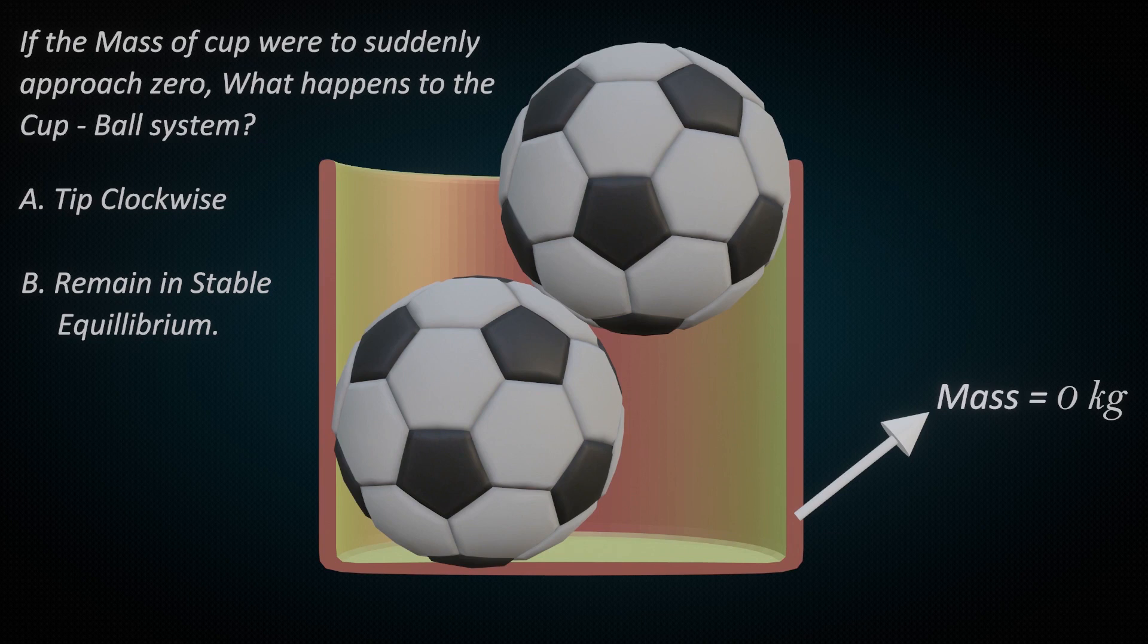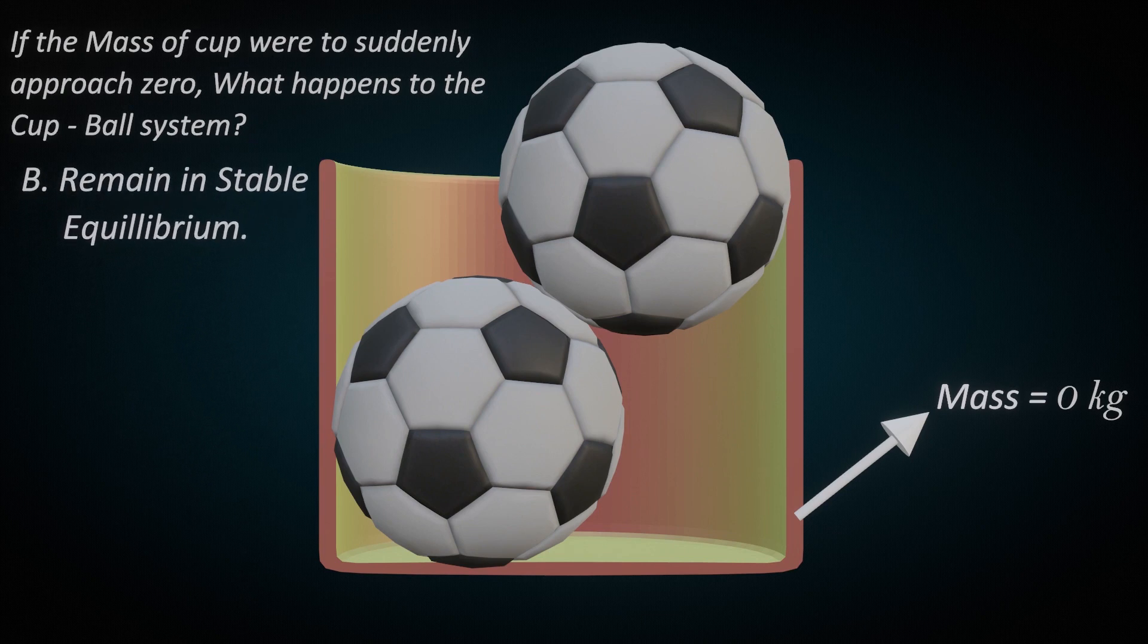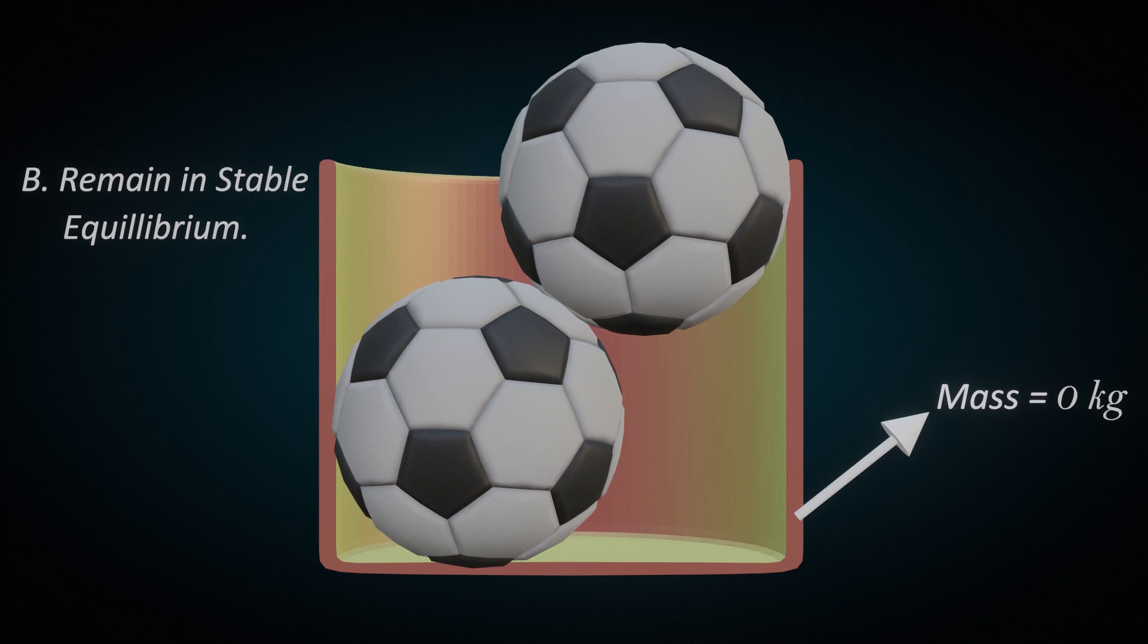Well, the cup-ball system would remain in stable equilibrium. Here, the center of mass of the cup-ball system is where the balls touch each other.